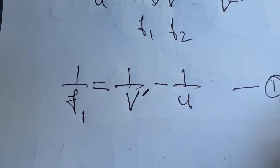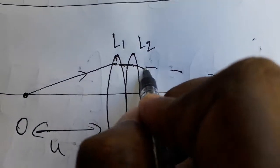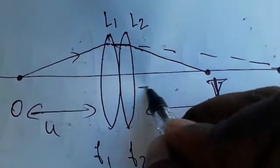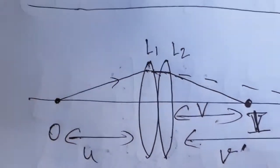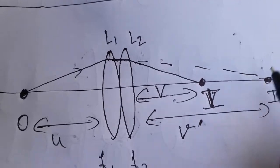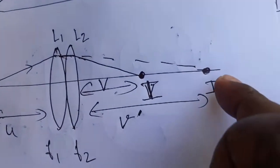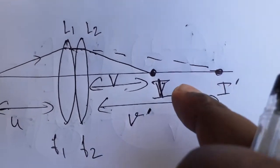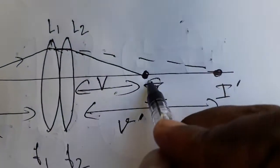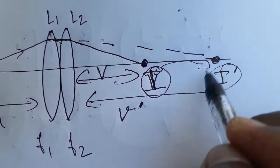For the second lens: 1/f2. Because of the second lens, the ray is further deviated and the final image is formed here at distance v. So the first object placed here forms an intermediate image i-dash. For the final image, i-dash acts as the object, and the final image is formed from this object i-dash.